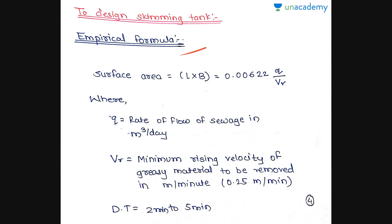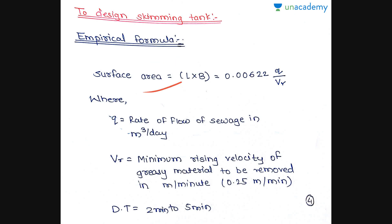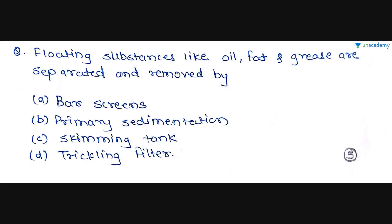Next is the design of the Skimming Tank. An empirical formula is given for this: Surface Area = L × B = 0.00622 × q / Vr, where q is the rate of flow of sewage in cubic meters per day, and Vr is the minimum rising velocity of greasy material to be removed in meters per minute — generally 0.25 m/min. This formula is very useful and questions may be asked on it.